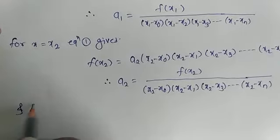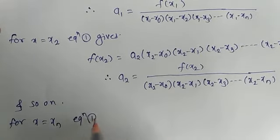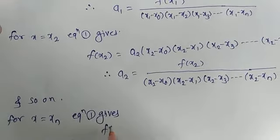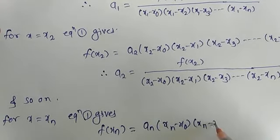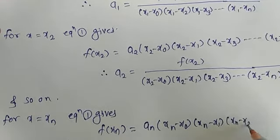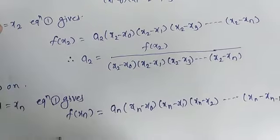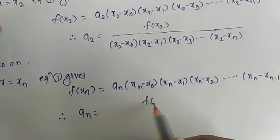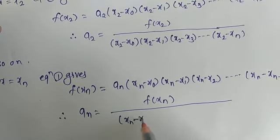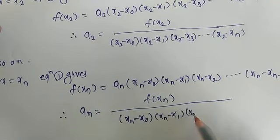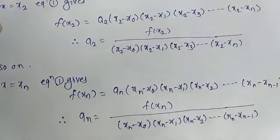Continuing this process, for x = xn, equation 1 gives f(xn) = an · (xn − x0)(xn − x1)(xn − x2)···(xn − x(n−1)). Therefore, an = f(xn) / [(xn − x0)(xn − x1)(xn − x2)···(xn − x(n−1))].